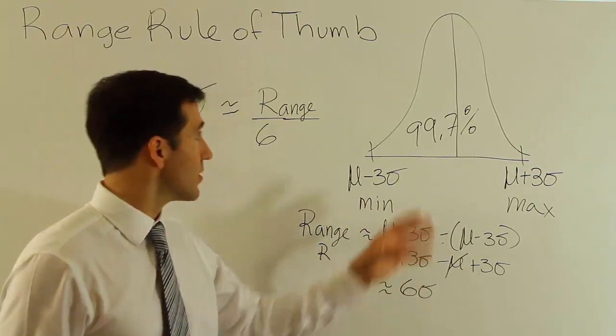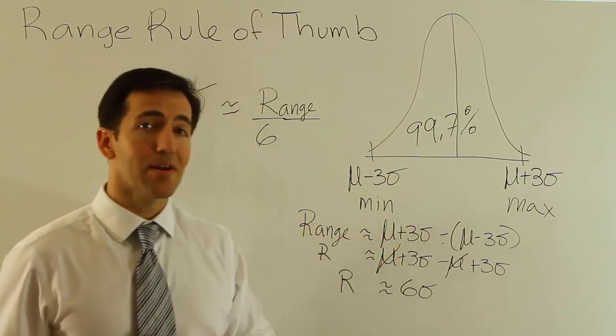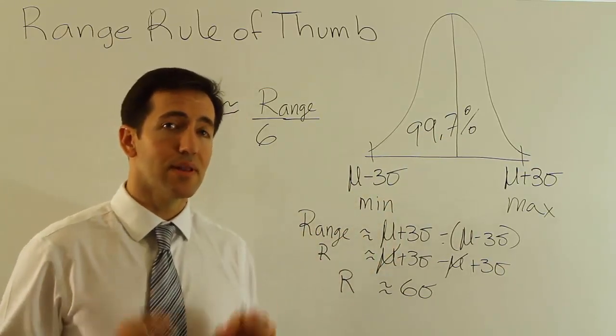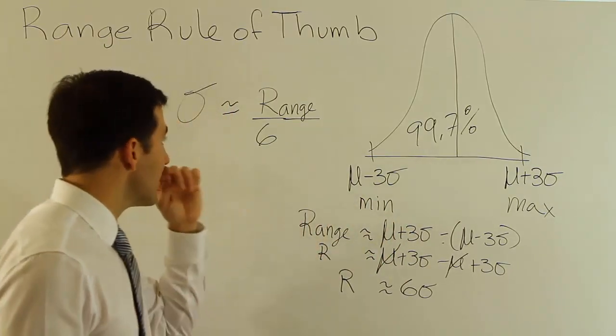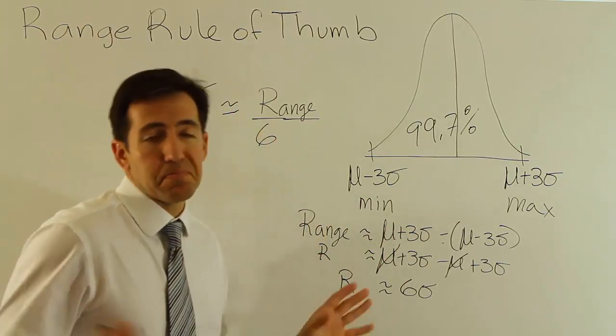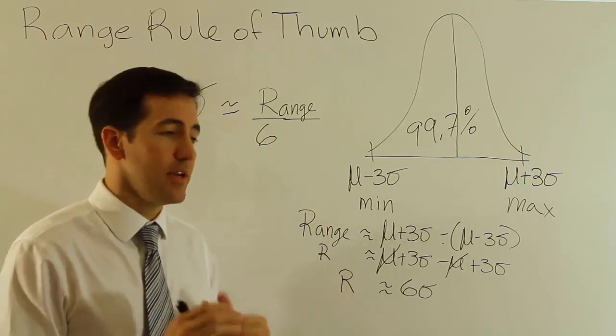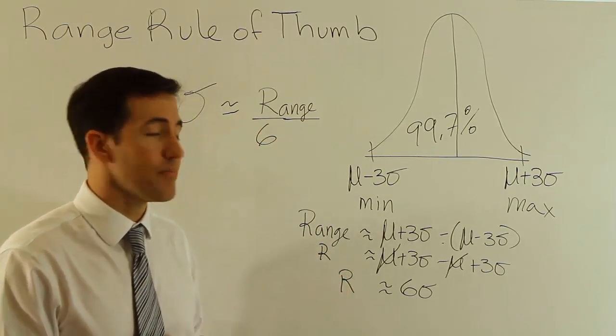If it's bell-shaped, it'll capture 99.7%. But that span under any curve captures no less than about 90% of the data. So that's still a pretty good span. So I like the range over six. Other people like the range over four. If you know it's sort of bell-shaped in nature, then you can use that.